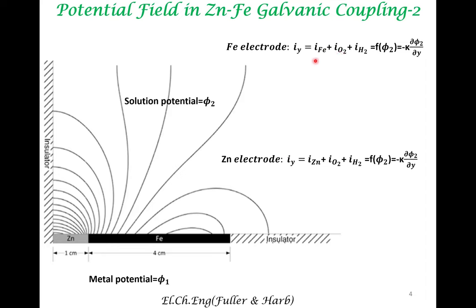What is the functional form of these equations? These are typically represented via Tafel equations. What is to be noticed is that while there cannot be mass transfer limitation for hydrogen evolution reaction — because water is always present — oxygen reduction reaction can be under mass transport limitation. These have to be incorporated to model the system. Once you solve these equations, the result of that mathematical modeling procedure is the potential distribution in the electrolyte.